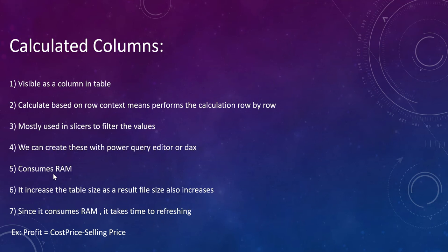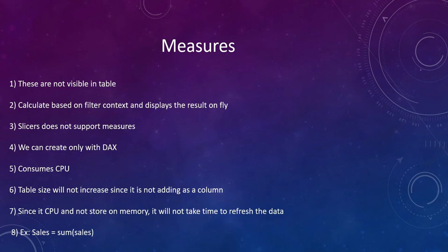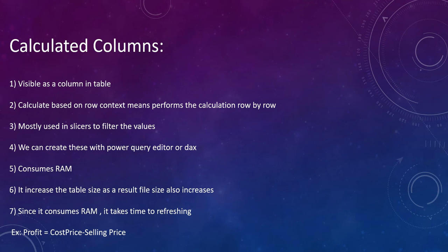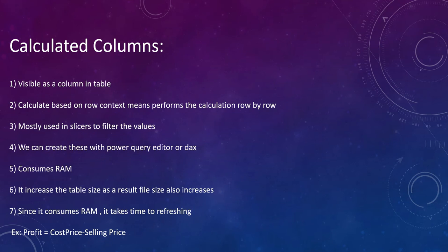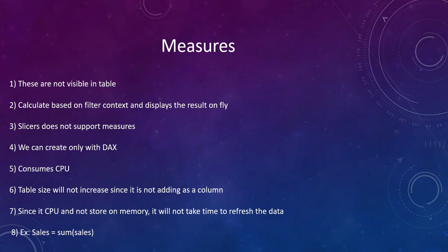Another major difference is resource consumption. Calculated columns consume RAM, which means they take a lot of memory, causing the file size to increase and performance to degrade. Measures, on the other hand, consume CPU and do not increase the table size or memory usage, so performance is not degraded.